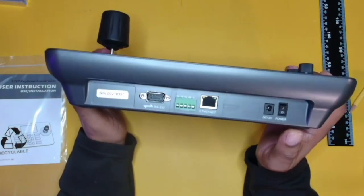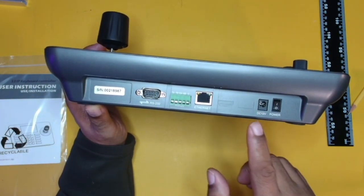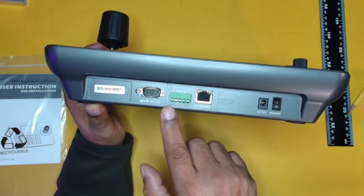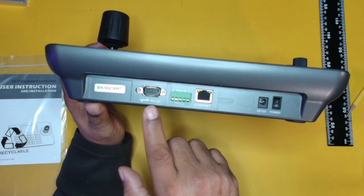Now, if we look at the back here, you guys can see we have our power input, which is our 12 volt. We have our power switch. We also have Ethernet. We have this RS422 and we have our RS232.